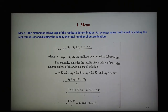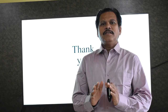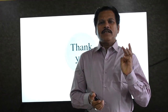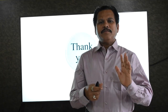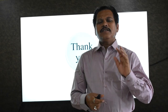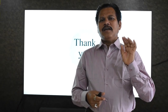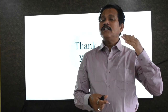The mean of replicate determinations is more reliable than a value obtained by a single determination. The remaining statistical terms — median, average deviation, and standard deviation — will be covered in the next part of the presentation. Today we have seen different types of error, what is absolute error, what is relative error, determinate error and indeterminate error, and the statistical test of data including the mean. The remaining parts — median, average deviation, and standard deviation — will be seen in the next part.